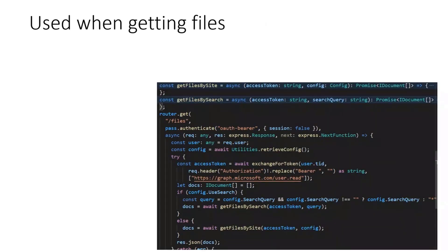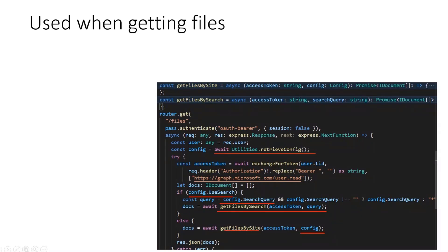Where do I use this in action? In my backend server where I'm getting the files. First I retrieve my configuration, then I get an access token. I check if I'm using search — if so, I use the search query and kick off a method for that. The other option is to provide the whole configuration object to my getFilesBySite method, where in the background I construct the URL from site ID, list ID, and so on.